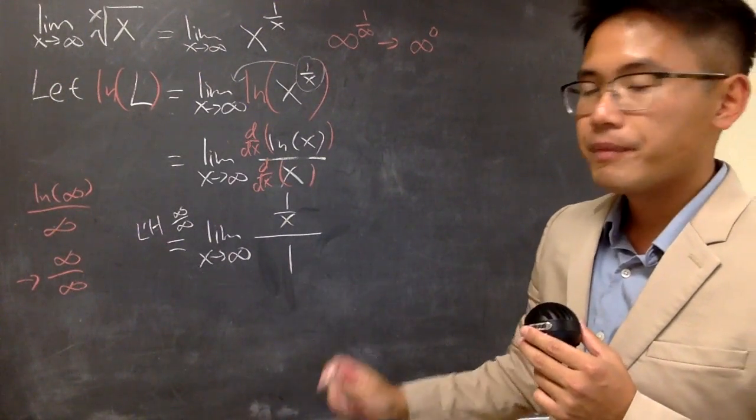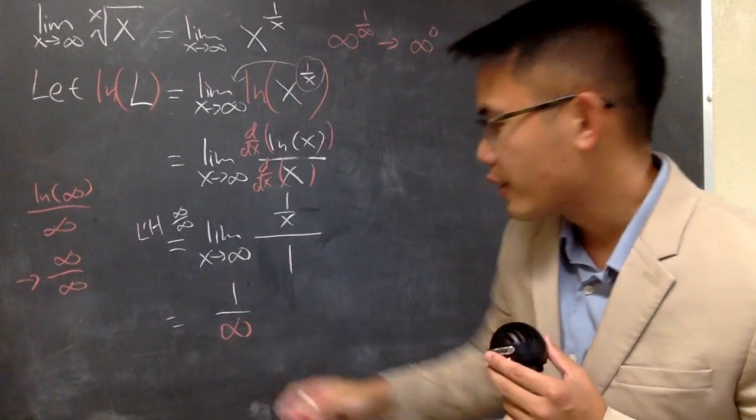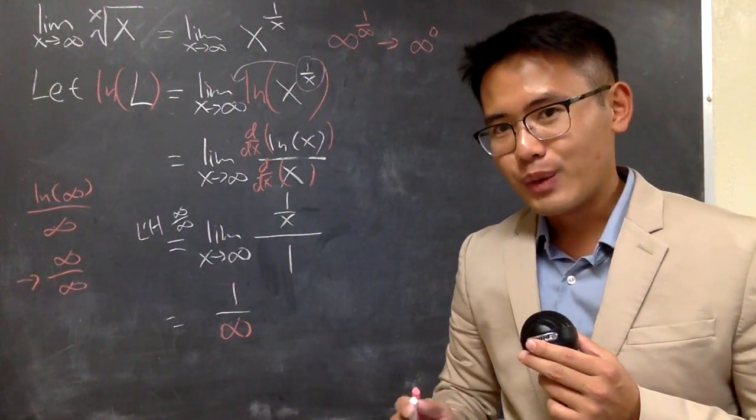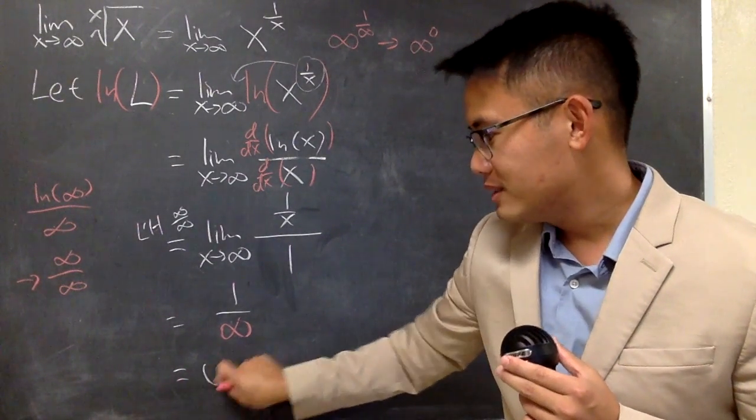And, now, I will plug in infinity here. And, we have 1 over infinity right here. This is something that we can draw a conclusion. So, 1 over infinity, we know it's 0.